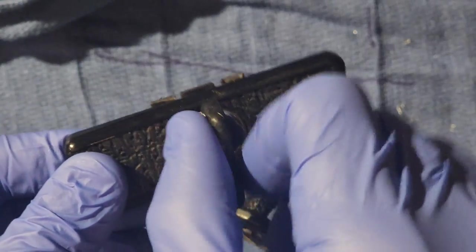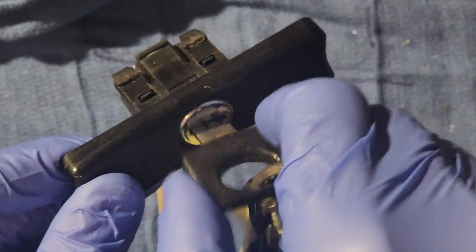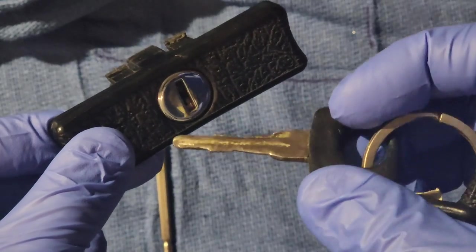I started with the tailgate lock because I want to have one key doing all the locks on my restoration. After getting the tailgate to match the ignition key, I'm now going to work on the glove box.